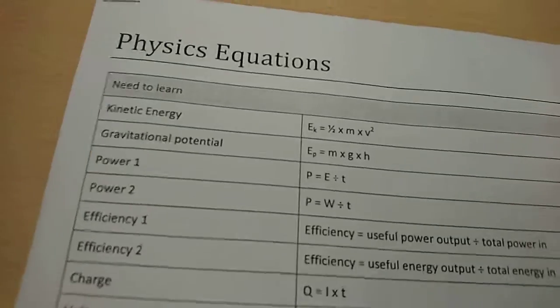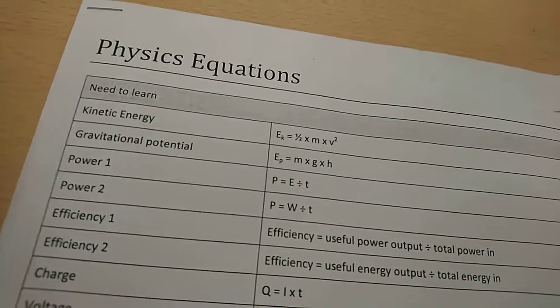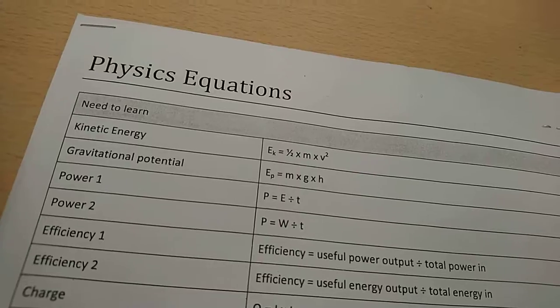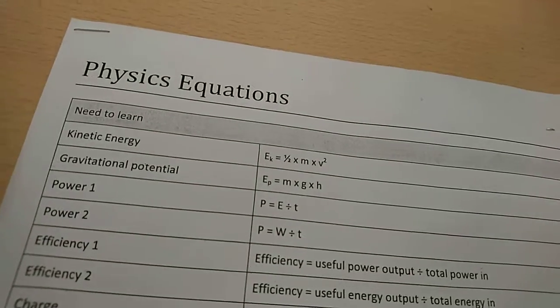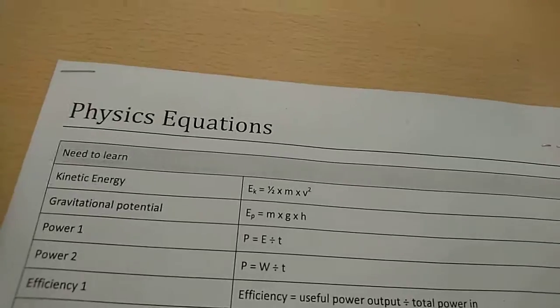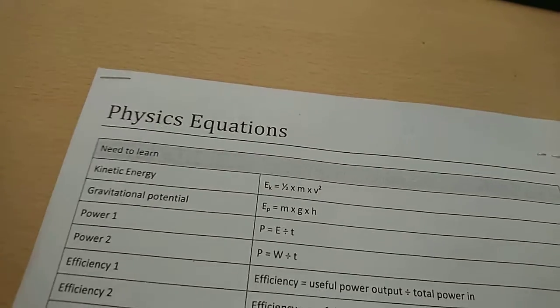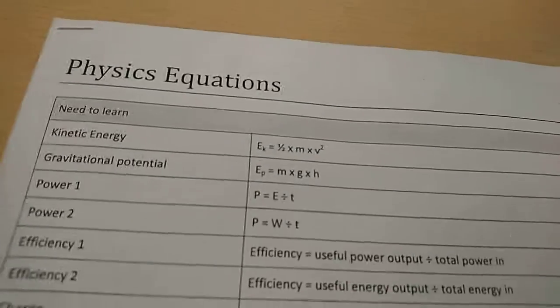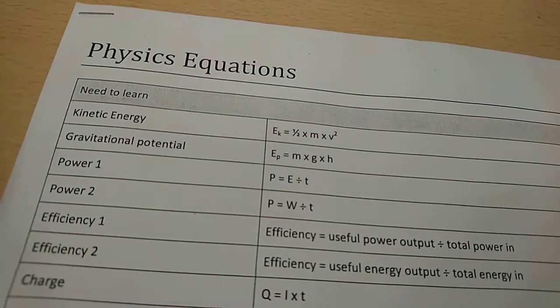So first we've got kinetic energy, which is Ek. Kinetic energy equals a half, which is 0.5, times mass times velocity squared. The mass is in kilograms and the velocity is in meters per second.